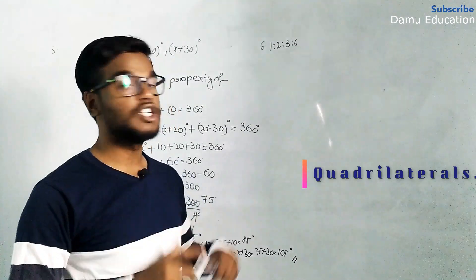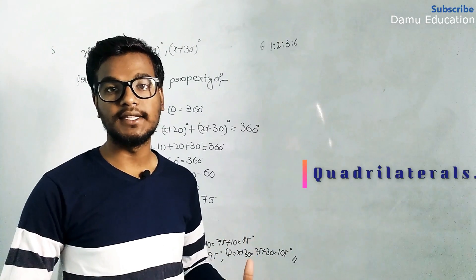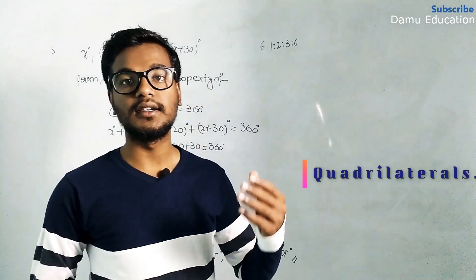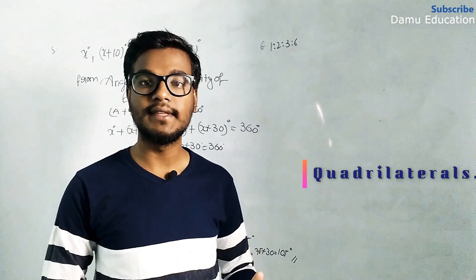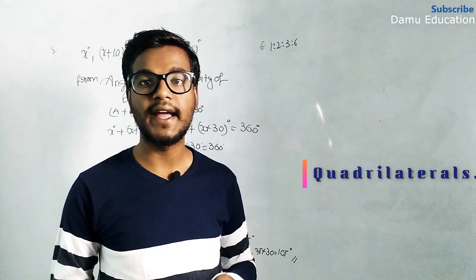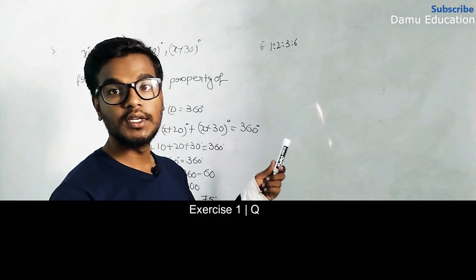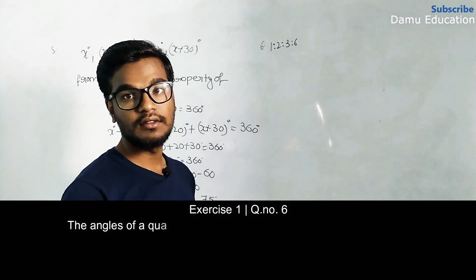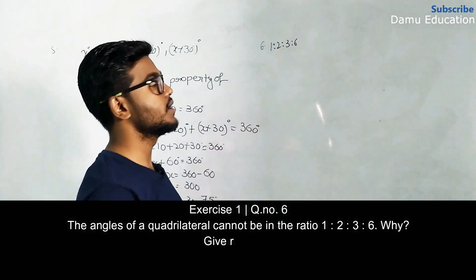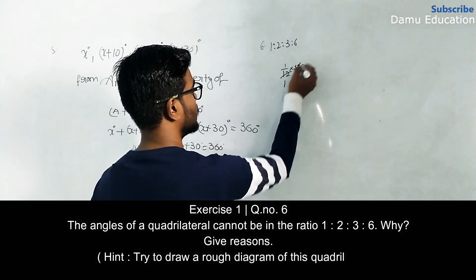The sixth question states that in a quadrilateral, the angles are in the ratio 1:2:3:6. They are asking why this should or should not be possible — we will check and confirm. The sum of the ratio parts is 1 plus 2 plus 3 plus 6 equals 12.